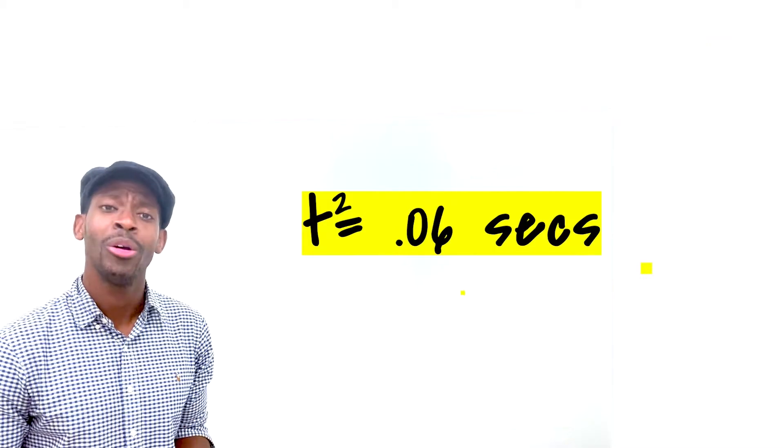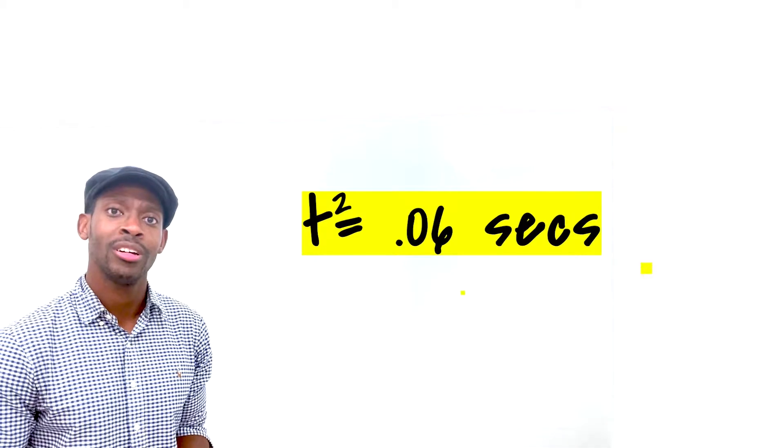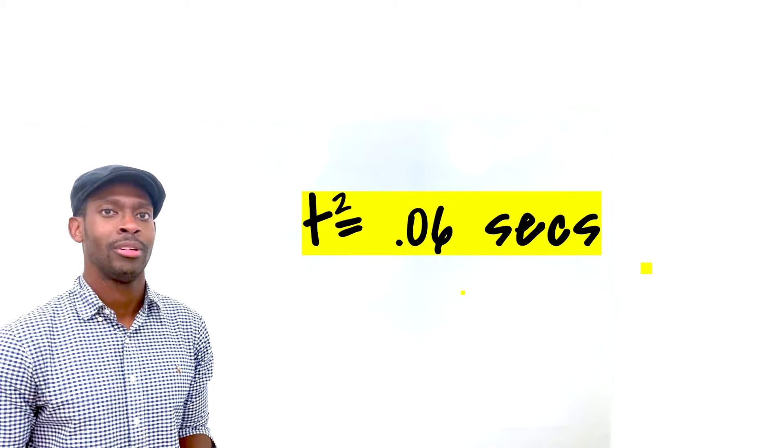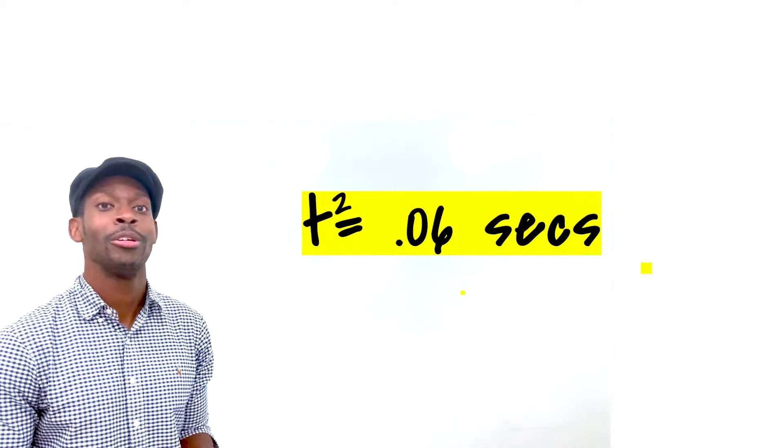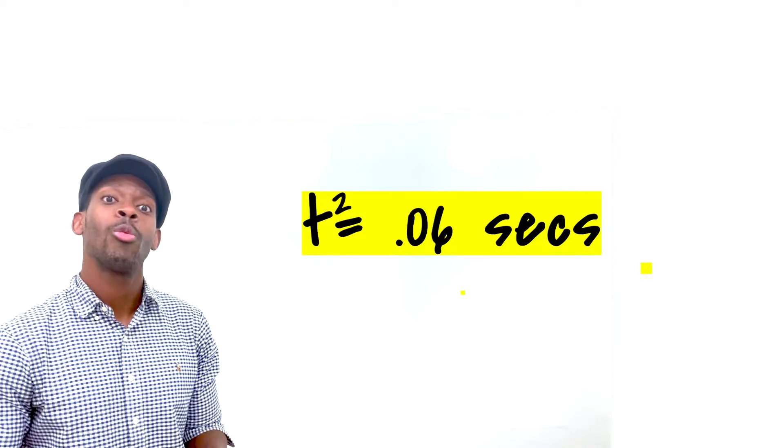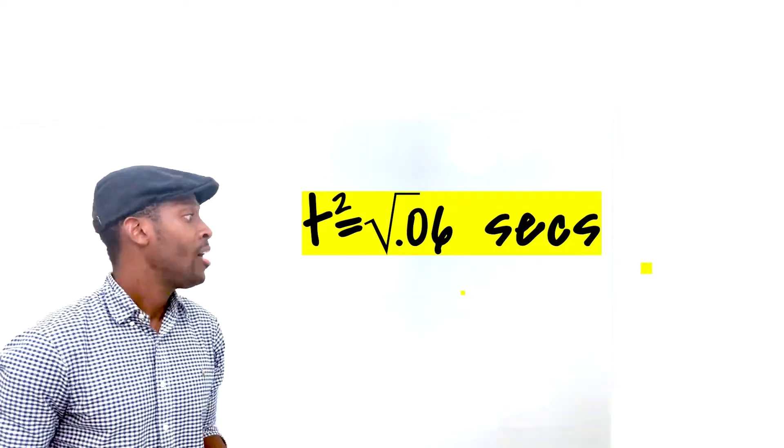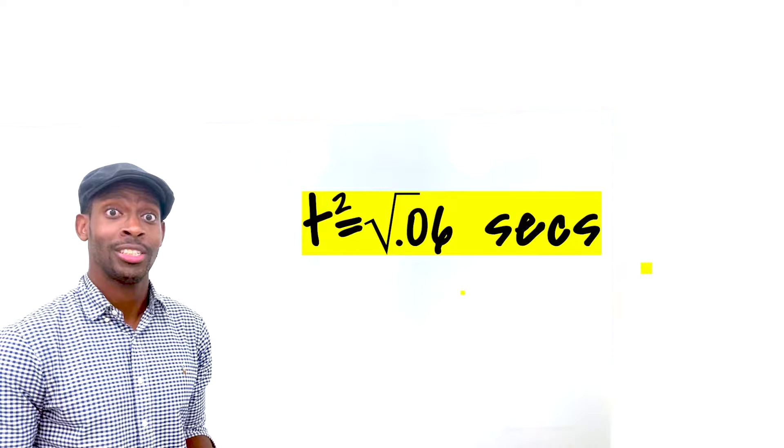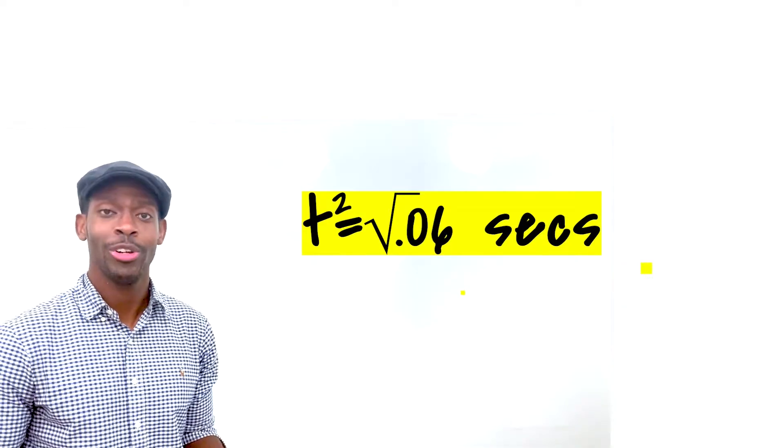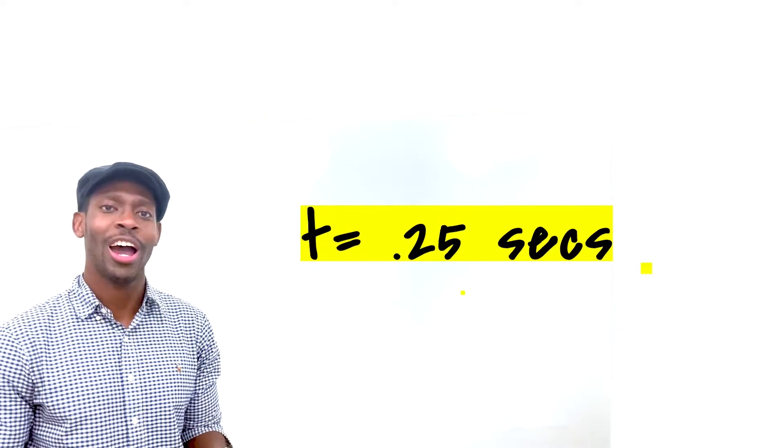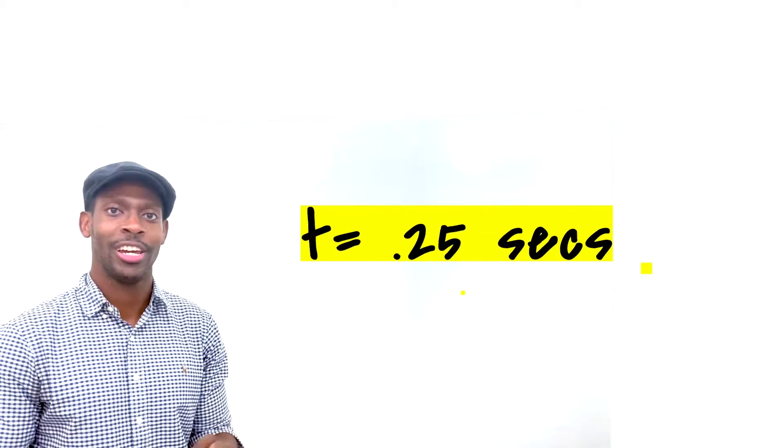To get t, we need to do the opposite of squaring a number. Oh goodness. Thank you. You didn't say divide by 2. We're going to take the square root of that. The square root of 0.06 is 0.25. It'll take 0.25 seconds for this ball to land.